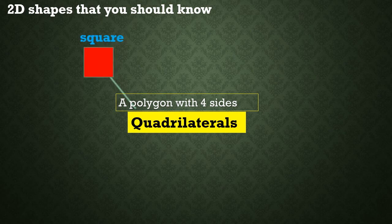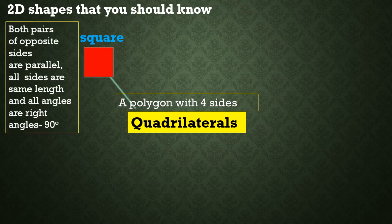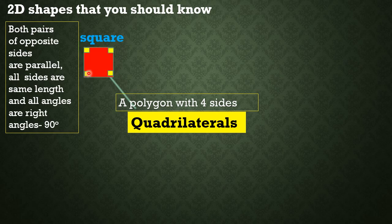Square. A square is a quadrilateral. It has both pairs of opposite sides that are parallel. All sides are the same length, and all the angles are right angles. Each angle measures 90 degrees. A square has two pairs of opposite sides and they are parallel, all angles are right angles, and all sides are the same length.